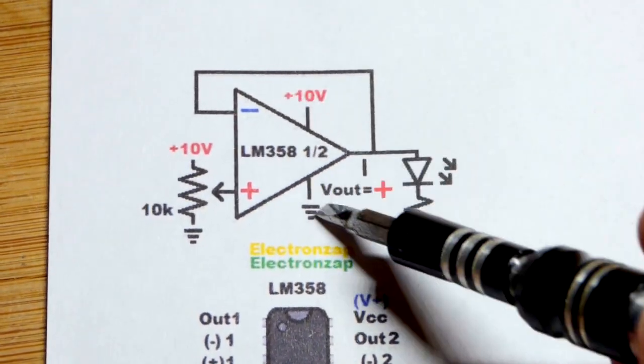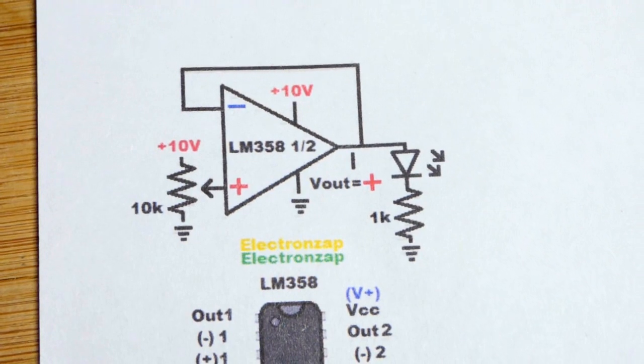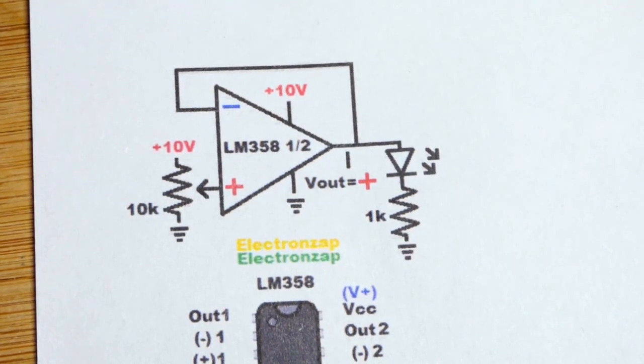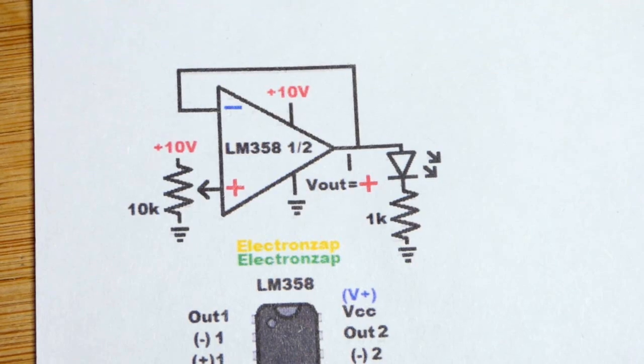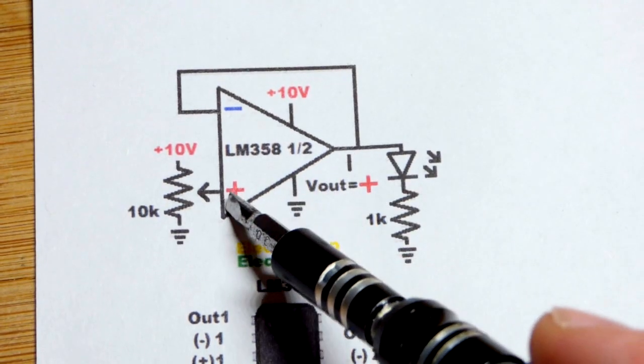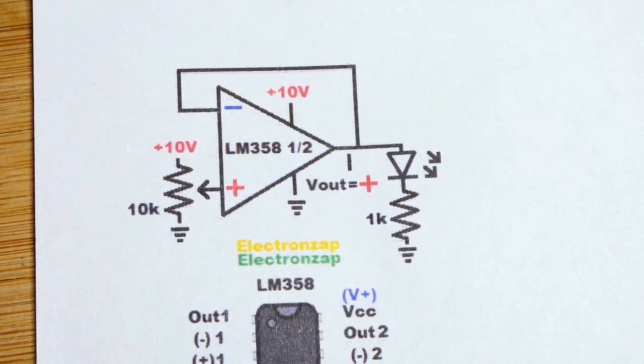Sometimes they don't show the power on the schematic symbol, but you always got to power it. So really, that's about all there is to the circuit. It's pretty simple. The voltage follows. Output voltage follows what the non-inverting input voltage is.